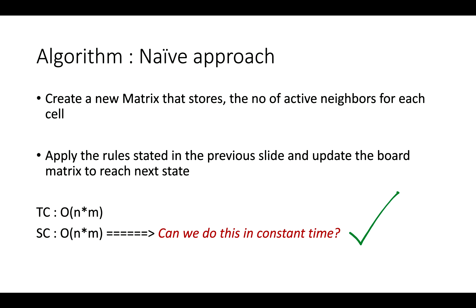The naive approach would be to create a new matrix and store the number of active neighbors for each cell, apply those two rules, and update the board state for each cell to reach the next state of the complete matrix. The time complexity of this algorithm would be O(N×M), where N represents the number of rows and M represents the number of columns. Similarly, the space complexity would be O(N×M) because you have created a new matrix for storing the number of active neighbors.